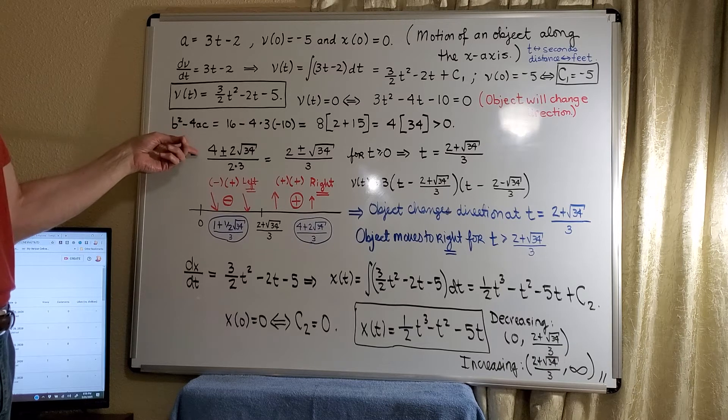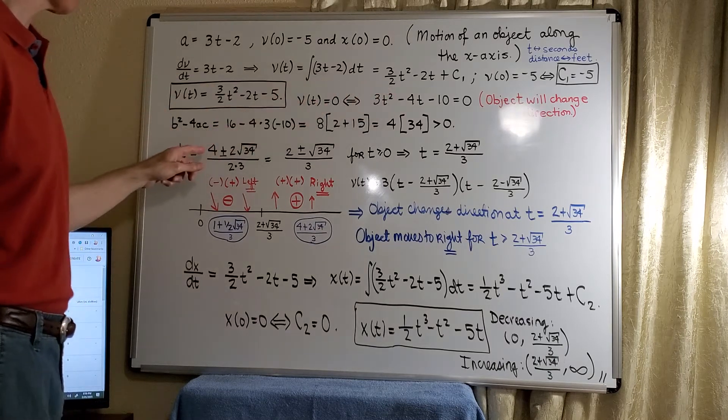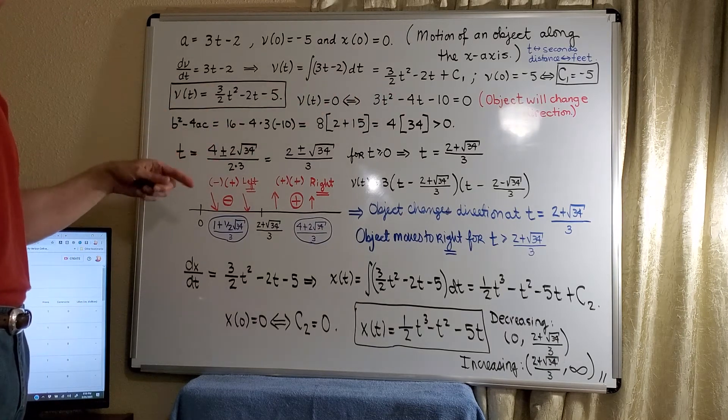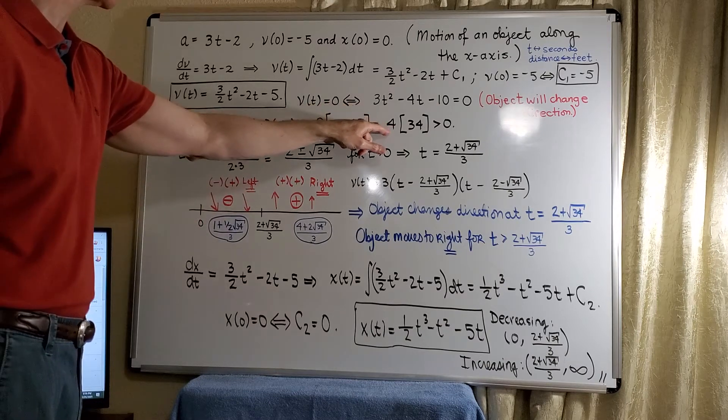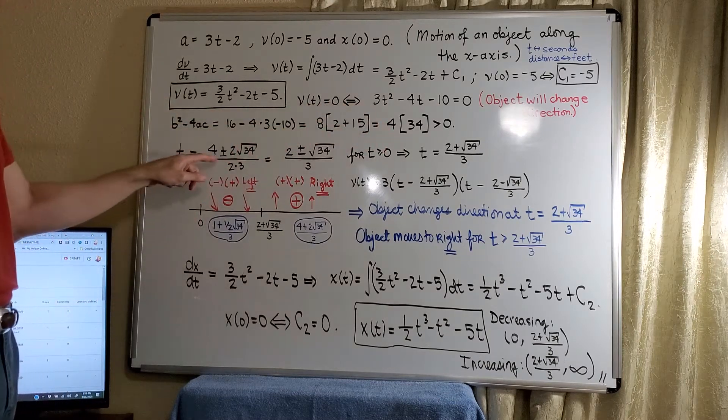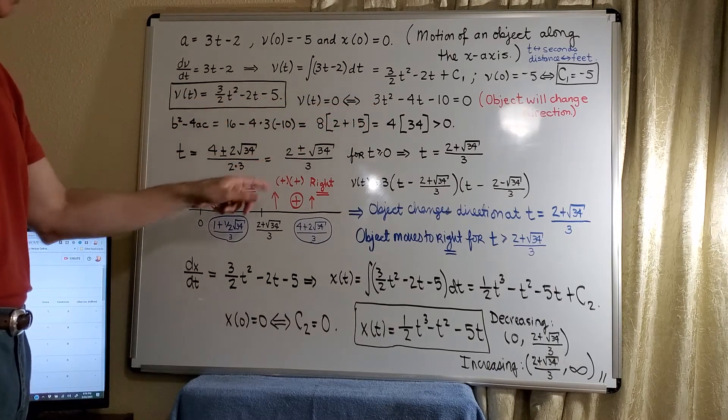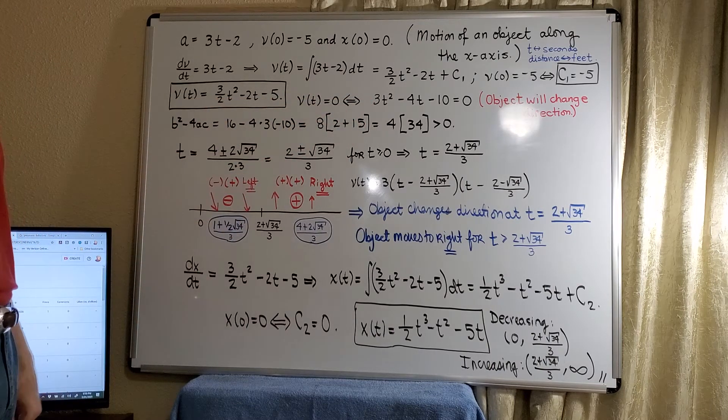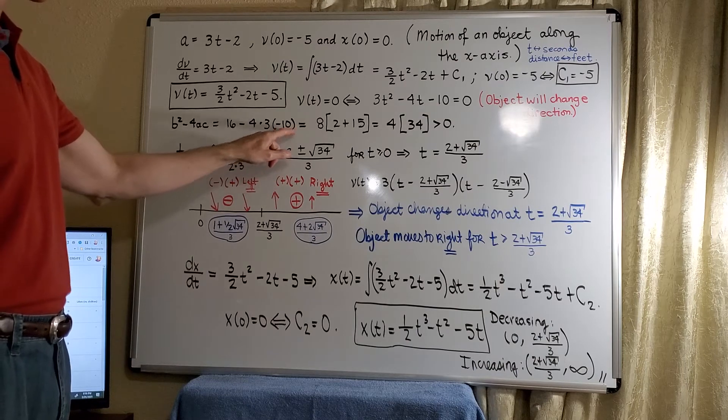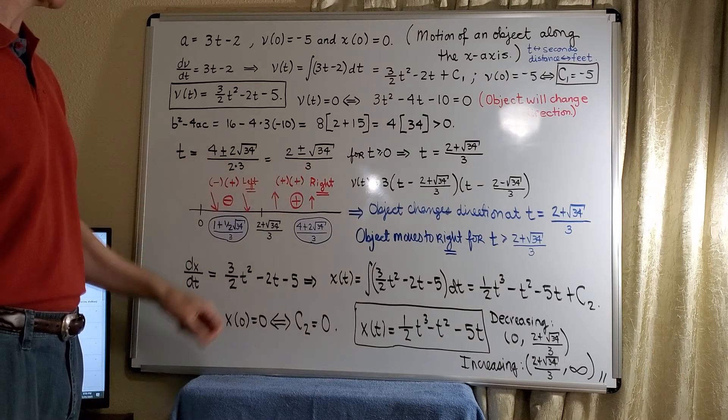We have the opposite of b, which is 4, plus or minus the square root of the discriminant. That'll give us 2 root 34 divided by 2 times a, which is 2 times 3. All the 2s absorb, and we're left with 2 plus or minus root 34 divided by 3.